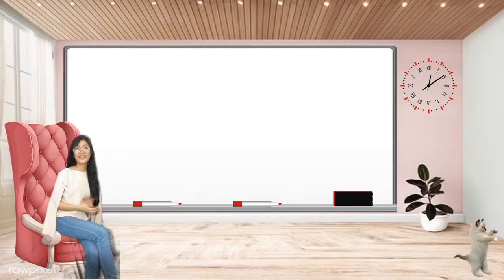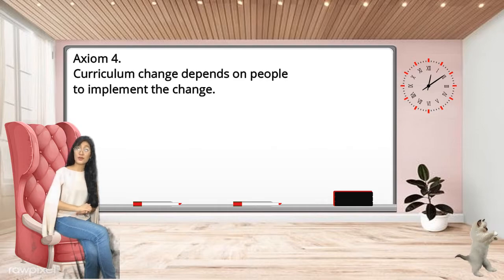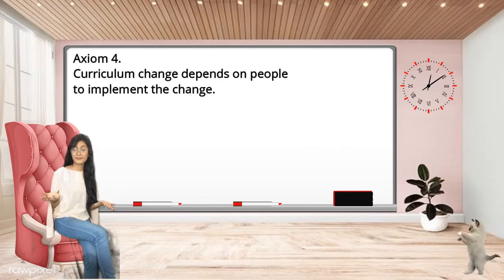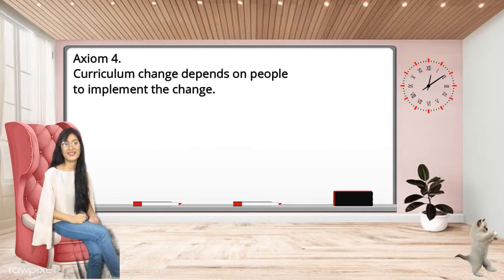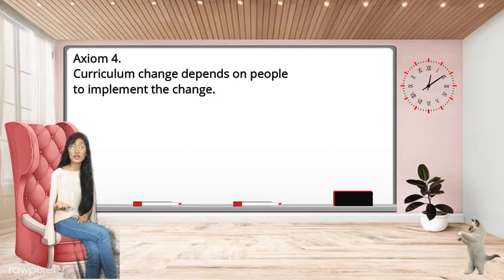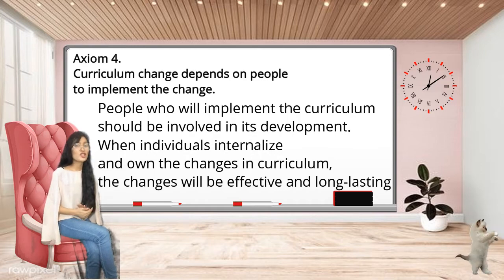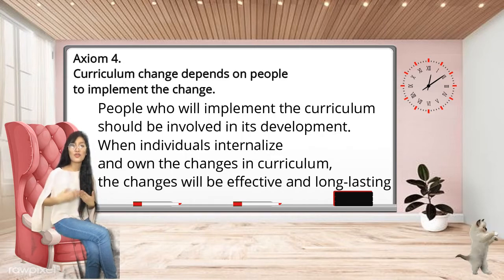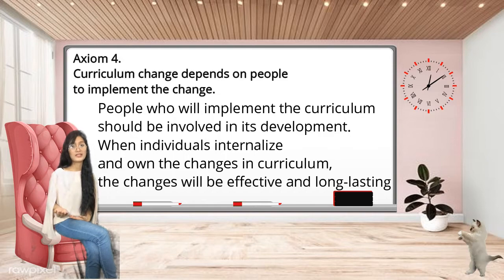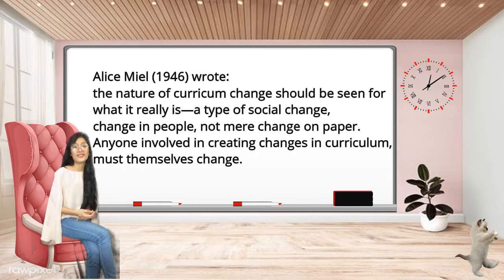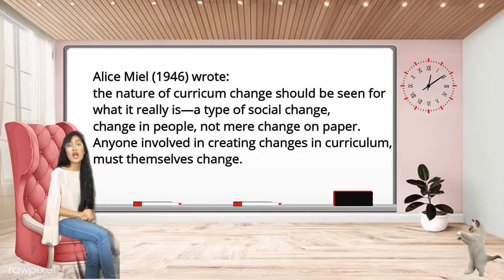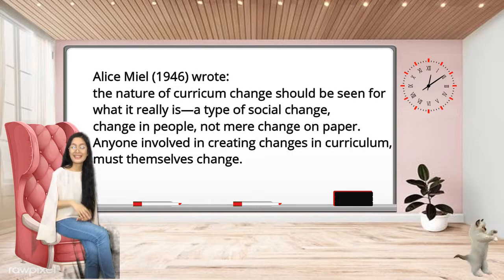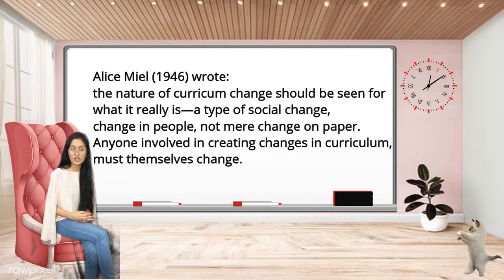Just because we make changes doesn't mean we have to throw everything out. Axiom 4: Curriculum change depends on the people who implement the change. Who are the implementers of the curriculum? That's right — the teachers! Teachers are the implementers of the curriculum. Therefore, teachers should be able to meet the objectives while targeting the interests of the students. Teachers also have to be empowered and know that what they think makes a difference to other people. Alice Mill wrote that the nature of curriculum change should be seen for what it really is — a type of social change, change in people, and not mere change on paper.